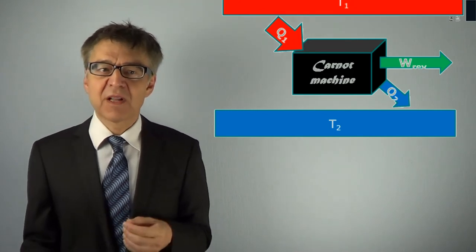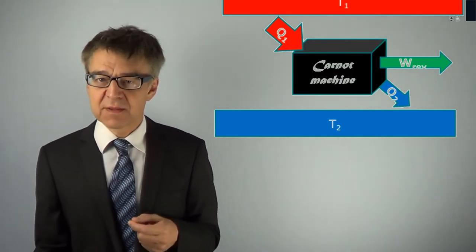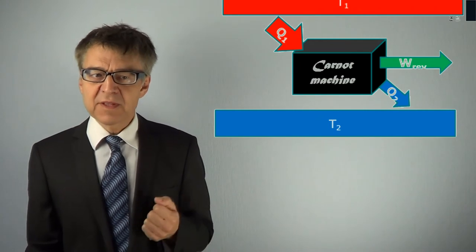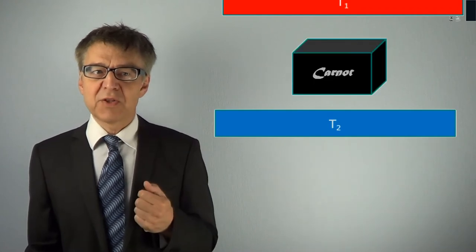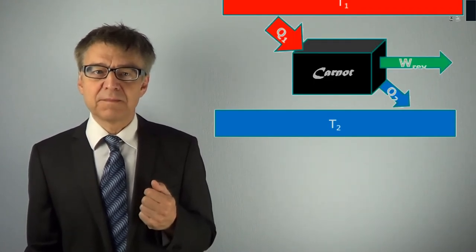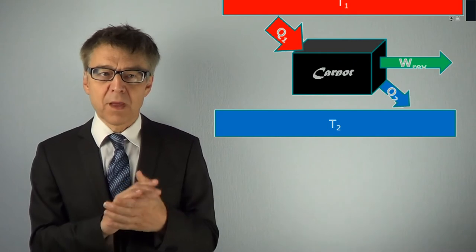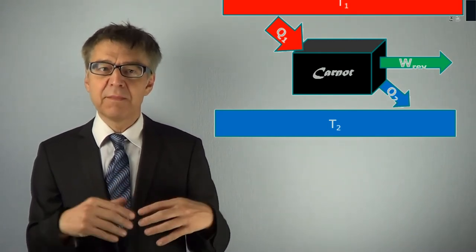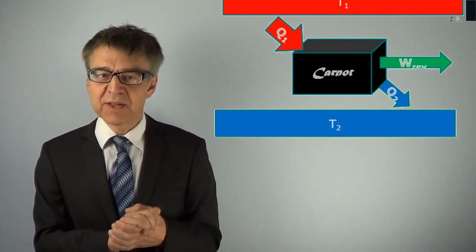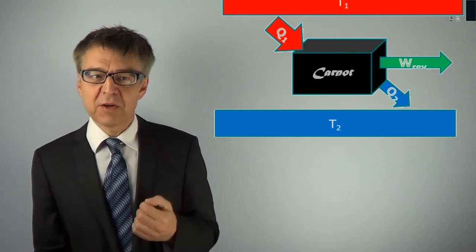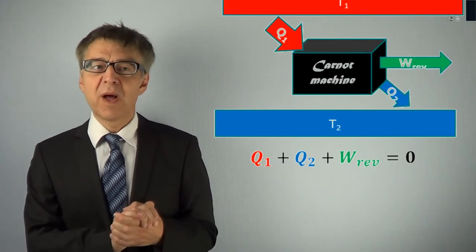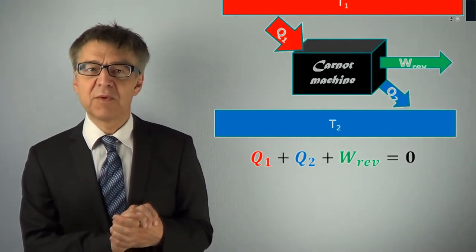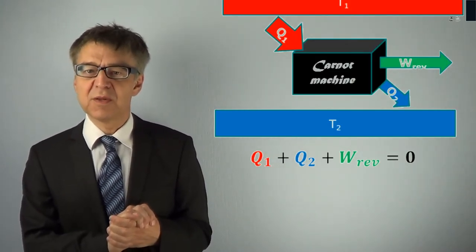How does the first law comment this process? The first law calls for the conservation of total energy. We see three amounts of energy in the Carnot cycle. Absorbed energy and emitted energy must be equal in magnitude. Due to the sign convention, we may formulate the energy balance as follows: Q1 plus Q2 plus W_ref is equal to zero.